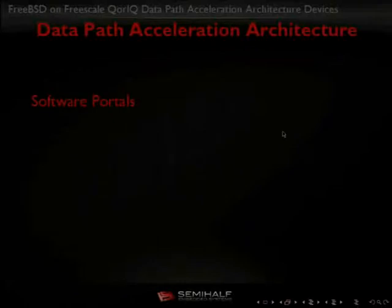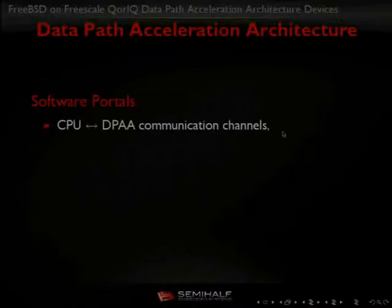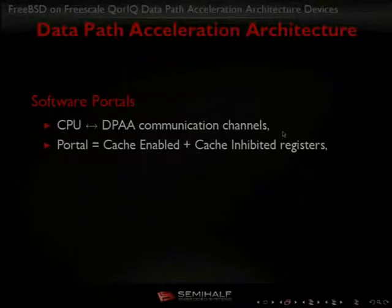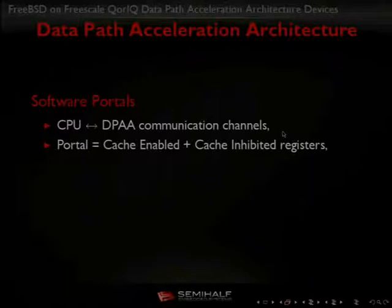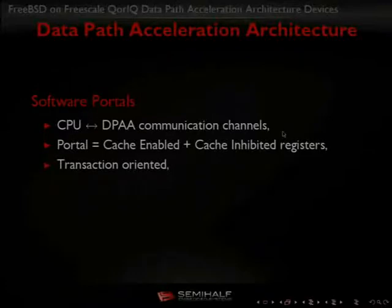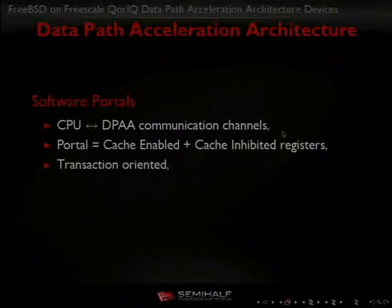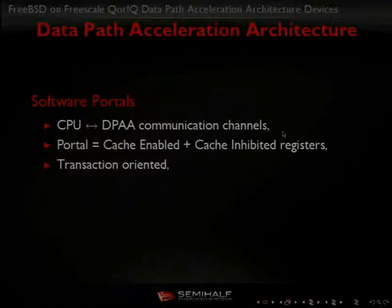Communication between DPAA and the CPU goes through portals. Portals are a new concept consisting of two sets of registers. One set is cache-inhibited and used for configuration purposes, and the cache-enabled register set is a transaction interface for exchanging data. To send a frame to the security accelerator, you put the address in the cache-enabled area of the portal, flush cache, wait for response — spinning about 100 cycles — and done, the packet is in the queue. This is very fast.